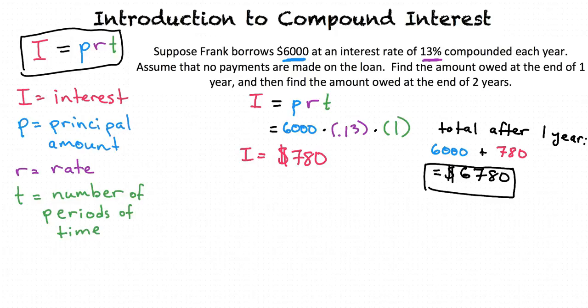Now we need to find the interest owed after 2 years. We need to be careful here. We can't substitute 6,000 in for P like last time and 2 for T to mean 2 years. We have to use the amount owed of $6,780 after the first year in order to compound the interest.